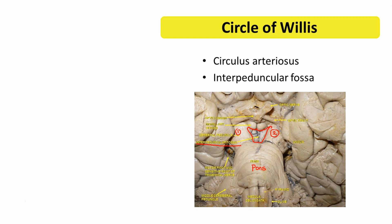The interpeduncular fossa is located between the cerebral peduncles; the posterior border is the pons, and anteriorly there are two bodies known as mammillary bodies. In front of the mammillary bodies, you can clearly see the optic chiasma and the optic nerve. Surrounding this interpeduncular fossa, we have blood vessels — branches from the major blood vessels of the cerebrum — which form a circle around it, giving rise to the circle of Willis.